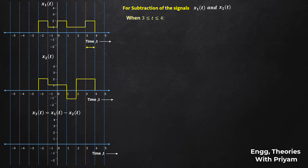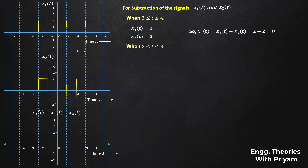When t is in [3, 4], x1(t) = 2 and x2(t) = 2, so x3(t) = 2 - 2 = 0. When t is in [2, 3], x1(t) = 1 and x2(t) = 2, so x3(t) = 1 - 2 = -1.